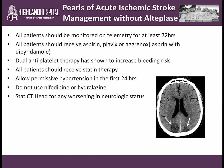Pearls for acute ischemic stroke management without alteplase: all patients should be monitored on telemetry for at least 72 hours, primarily because we are monitoring for paroxysmal atrial fibrillation, which is an independent risk factor for stroke. Also, 30% of patients actually do develop cardiac arrhythmias in the first 72 hours of having a stroke. All patients should receive aspirin, Plavix, or Aggrenox — dual antiplatelet therapy has actually been shown to increase bleeding risk, so start the patient on one agent. All patients should receive statin therapy. Patients should be allowed permissive hypertension in the first 24 hours; you don't want to drop their blood pressures too quickly or too much, as this can worsen the underlying ischemia. Do not use nifedipine or hydralazine, and get a stat head CT for any worsening in neurologic status.